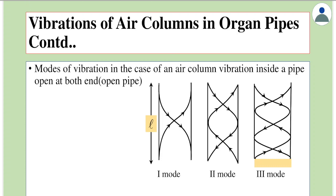Let's study about vibrations of air columns in an open pipe. An open pipe means both ends are open. Suppose from somewhere a wave is passed — by some means its particles are set in vibrations. At this end there will be high pressure created, and because of that high pressure, the wave reflects back. Based on the frequency of the external force, we get different vibrations here.